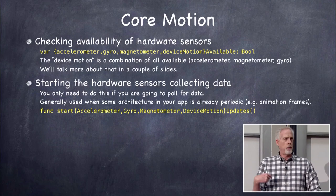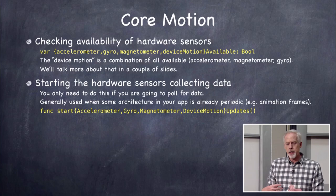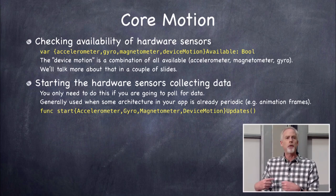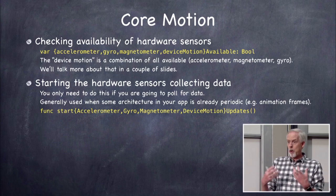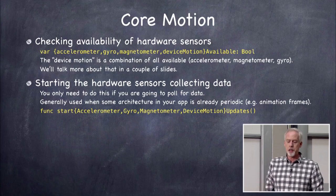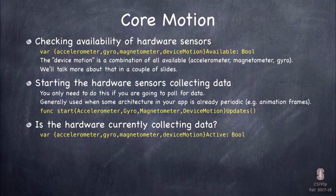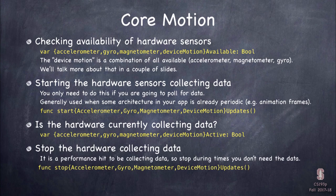To pull information without registering a closure, you call startAccelerometerUpdates or startGyroUpdates. That tells the hardware iOS wants this data, so if the hardware needs to be powered up, iOS will do that. You can check if hardware is on with accelerometerActive or gyroActive. A really important thing is to turn it off when not needed, because it requires battery. Turn it off any time you're not actually using the information.